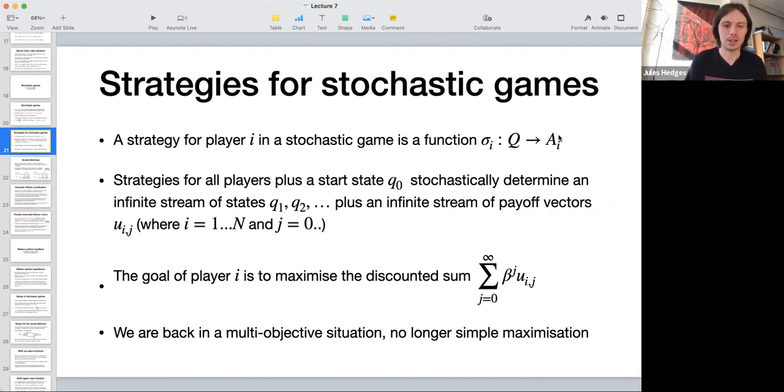As you should be completely used to, if we fix strategies for all of the players and we also fix the start state, then stochastically the Markov chain is going to generate an infinite sequence of states and also an infinite sequence of payoff vectors.